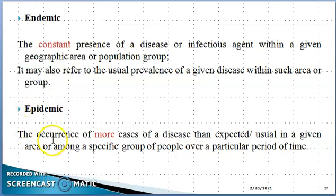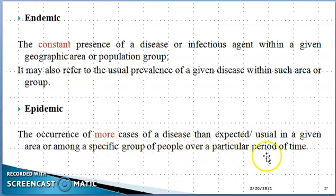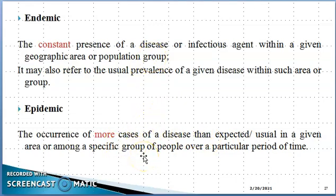Epidemic is the occurrence of more cases of a disease than expected in a given area and a more specific group of people over a particular period of time. Comparing to our endemic example: if last year in Lahore cases were two hundred, and this year cases go up to two hundred and three hundred, then that is epidemic.